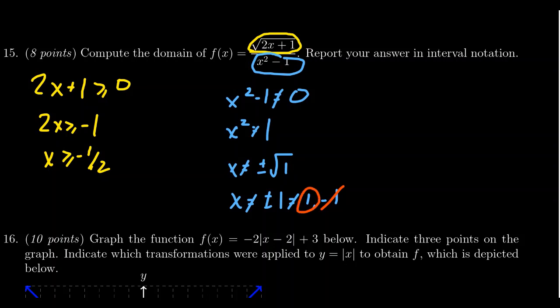But 1 is greater than negative 1 half. So considering those together, we take the intersection here. We need that x is greater than or equal to negative 1 half.